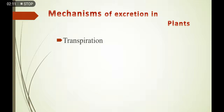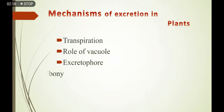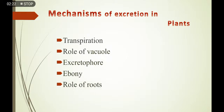Number one: transpiration. Number two: the role of vacuole. Number three: excretophore. Number four: the process of ebony. Number five: the role of roots. Plants پانچ مختلف طرح کے mechanisms کے ذریعے اپنی body سے waste کو excrete کرتے ہیں۔